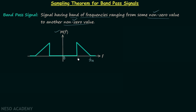The upper cutoff frequency is represented by f subscript H, the lower cutoff frequency is represented by f subscript L. The corresponding negative frequencies are minus FL and minus FH. The bandwidth B is defined as FH minus FL — upper cutoff frequency minus lower cutoff frequency.